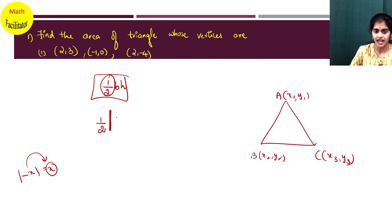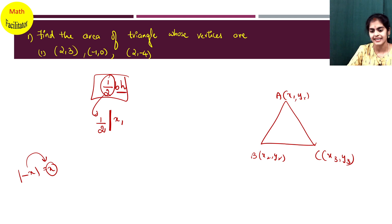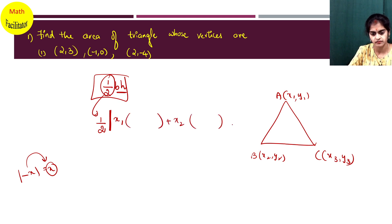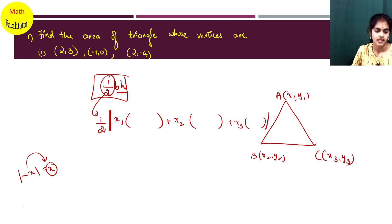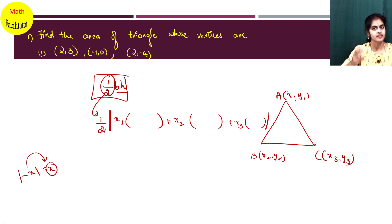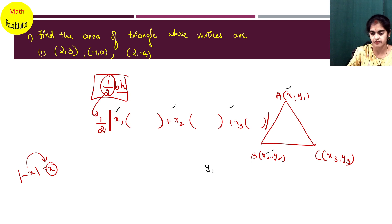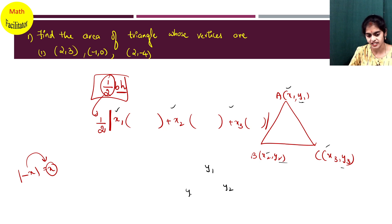So: half modulus of — instead of base into height — you will write using x1, y1, x2, y2, x3, y3. I will write x1 plus x2 plus x3 with a modulus, and inside each x-coordinate, I should write something using the y-coordinates. I have used all the x-coordinates; now I should use y-coordinates. So y1, y2, y3 are actually in cyclic order.